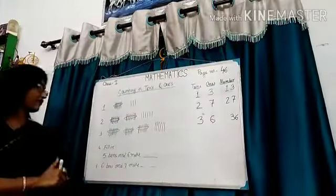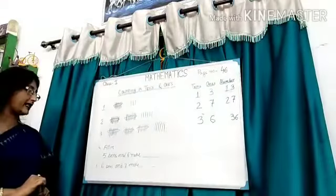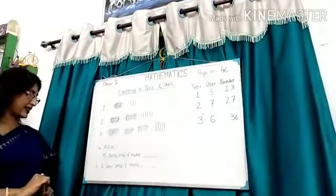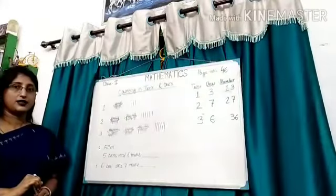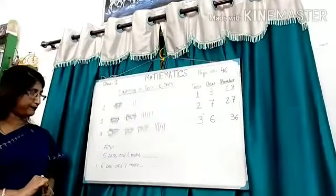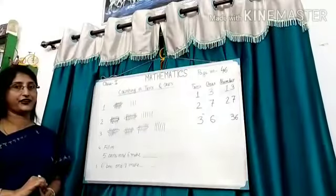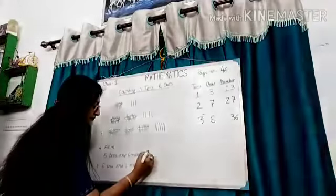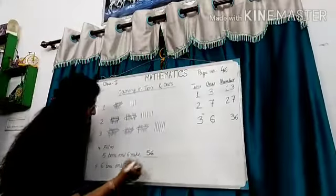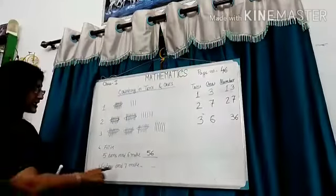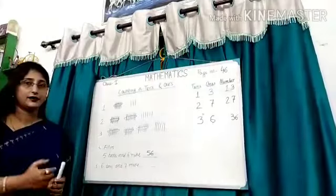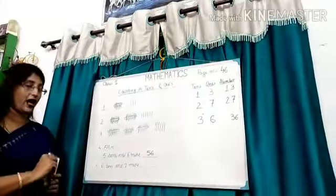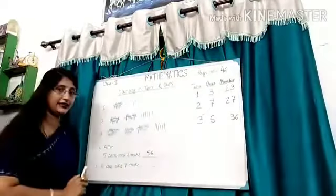Next, fill in 5 10s and 6 1s. 5 10s is 50 plus 6, 56. 5 10s and 7 1s, 57. 6 10s means 60 plus 7, 67.